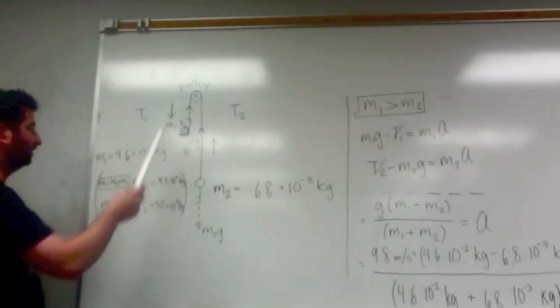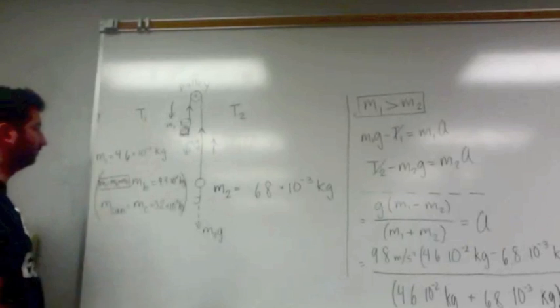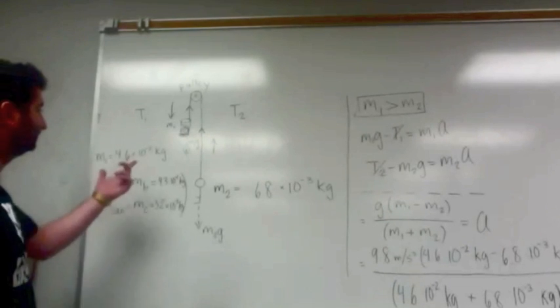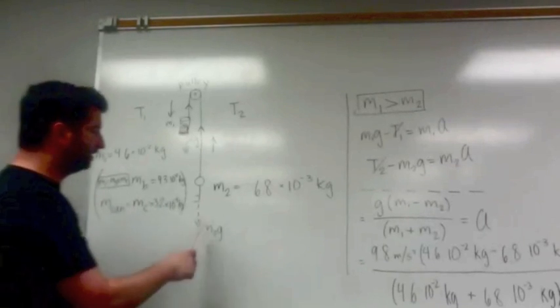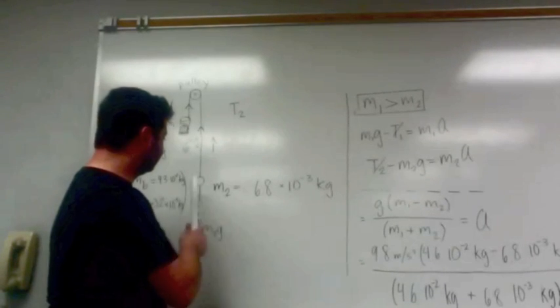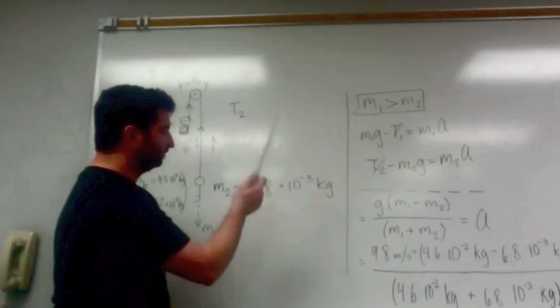The mass of the ball in the can is 4.6 times 10 to the negative 2 kilograms. The mass of the bird, the little counterweight, is 6.8 times 10 to the negative 3 kilograms.